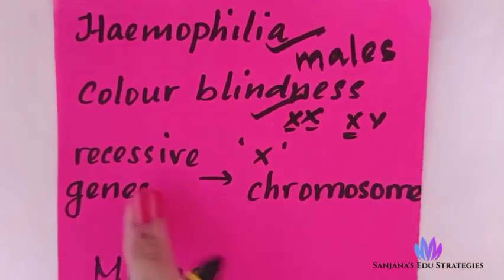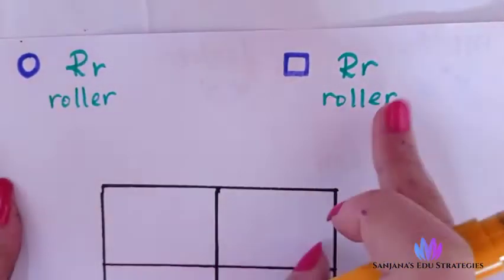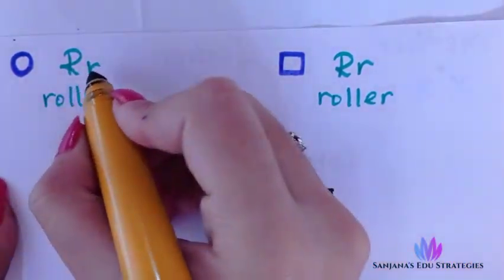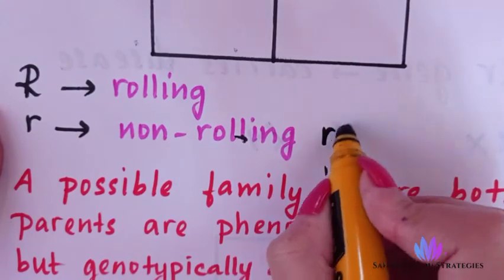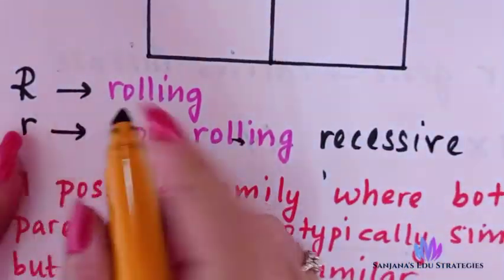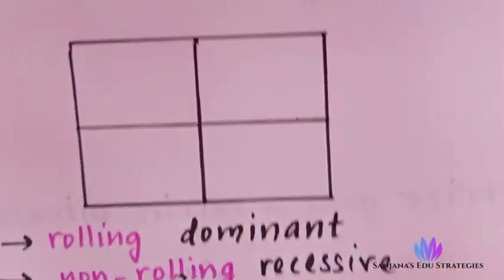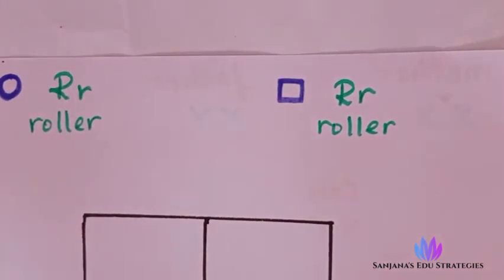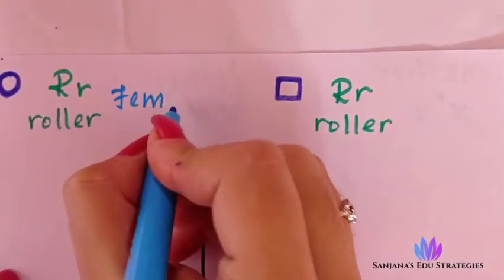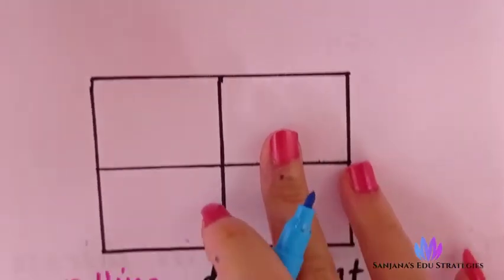Now we will see an example. We have two examples: RR (roller) and Rr (roller). Small 'r' represents non-rolling — it is a recessive character. Capital 'R' represents rolling, which is a dominant character. There are two parents. I am representing a circle for female and a square for male. Using a Punnett square we are going to find their offspring.